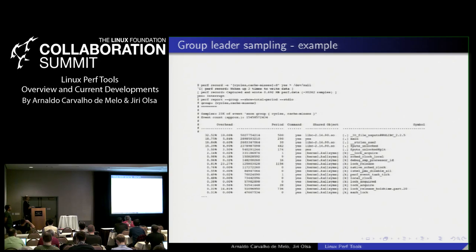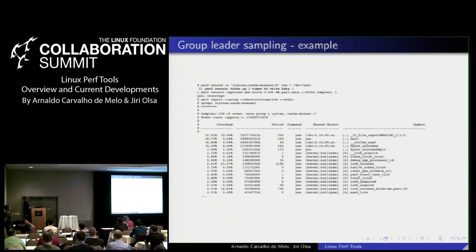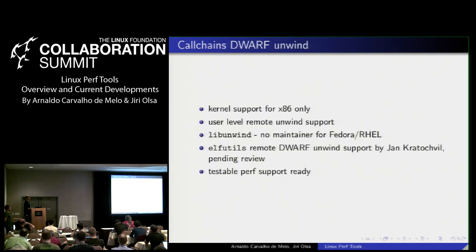For the record command, you simply specify the standard group and add the capital S modifier. For the report, nothing changes because group leader sampling is only relevant to the recording phase. In the report you can still use the group modifier, which displays the overhead columns for both cycles and cache misses events together.